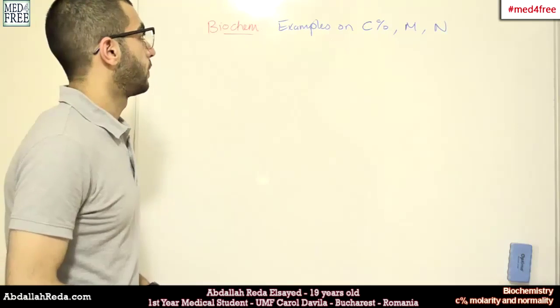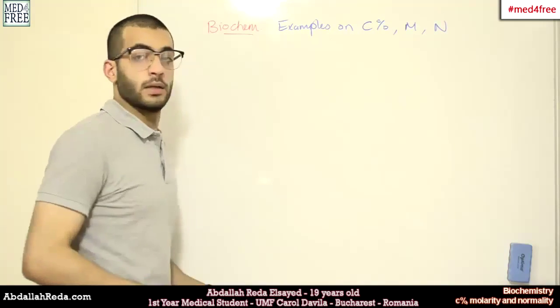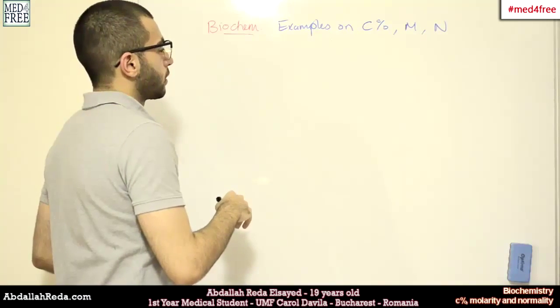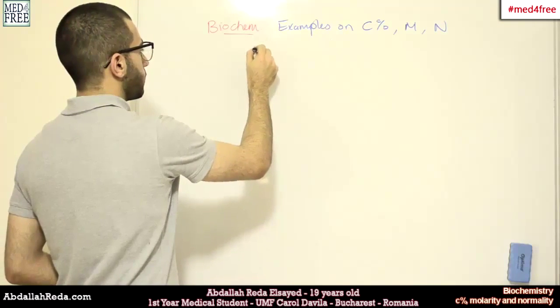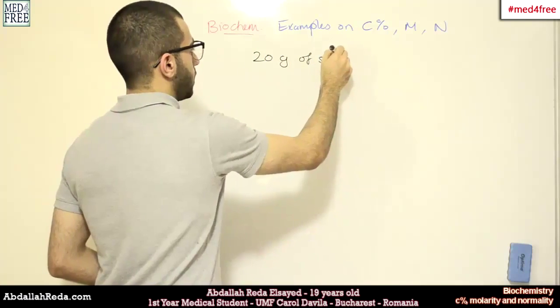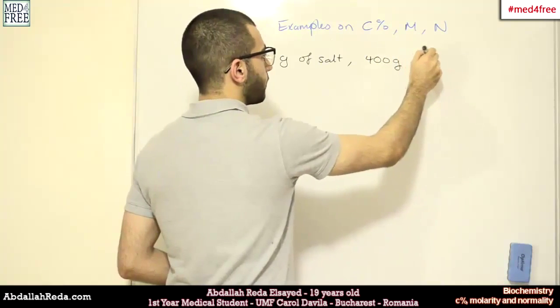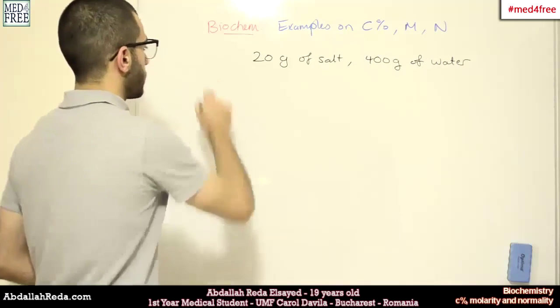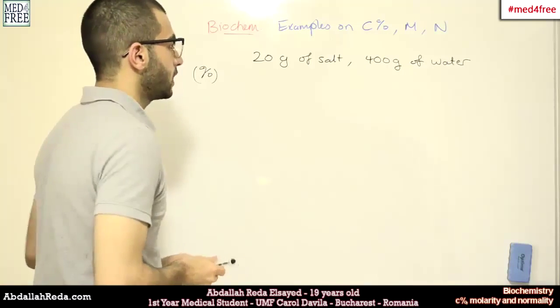This time we have some examples on the concentration percentage, the molarity and normality. Questions concerning such principles could be like this. We have, for example, 20 grams of salt and 400 grams of water. And we need to know the percent of salt in the solution.